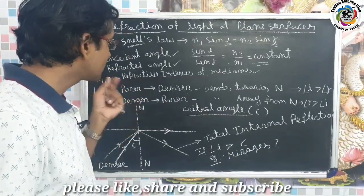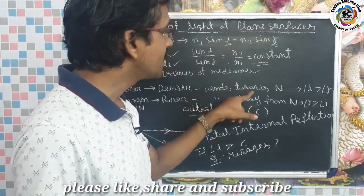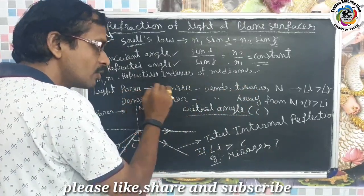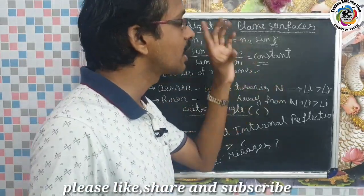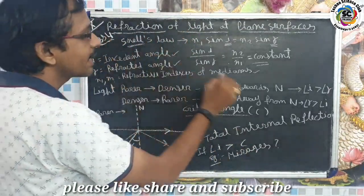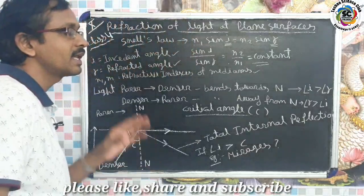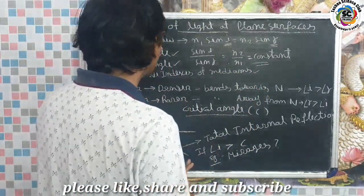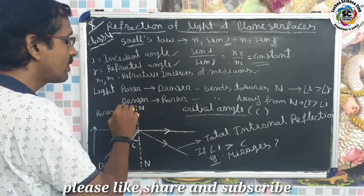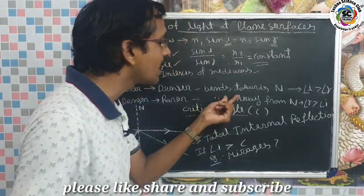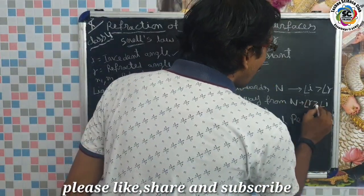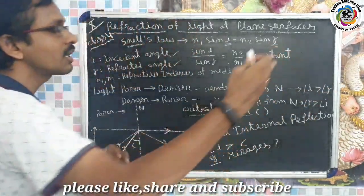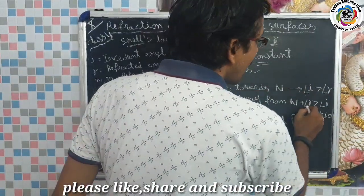When light travels from a rarer medium to a denser medium, the light bends towards the normal. In that situation, the incident angle i is greater than the refracted angle r. When light travels from a denser medium to a rarer medium, the light bends away from the normal, and the refracted angle r is greater than the incident angle i.